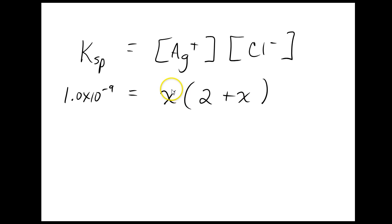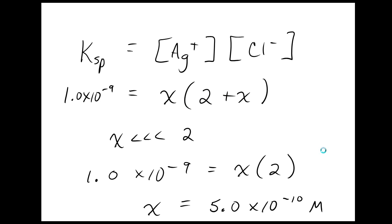we're going to assume that when X is tiny, and X has got to be tiny here, look how little this number is, X is super tiny, it's going to be absolutely ignorable compared to 2. 2 plus X is just going to be equal to 2.